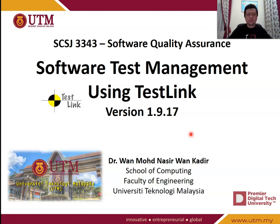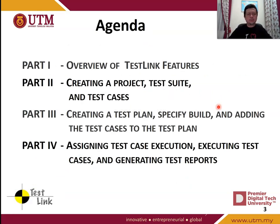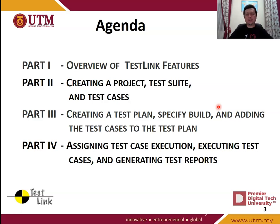The TestLink version I use is 1.9.17. In this module, we split into 4 parts. The first part is an overview of TestLink features. The second part is about creating a project, test suits, and test cases. The third part is about creating a test plan, specifying builds, and adding test cases to the test plan. Part 4 covers assigning test case execution, executing the test cases, and generating test reports.